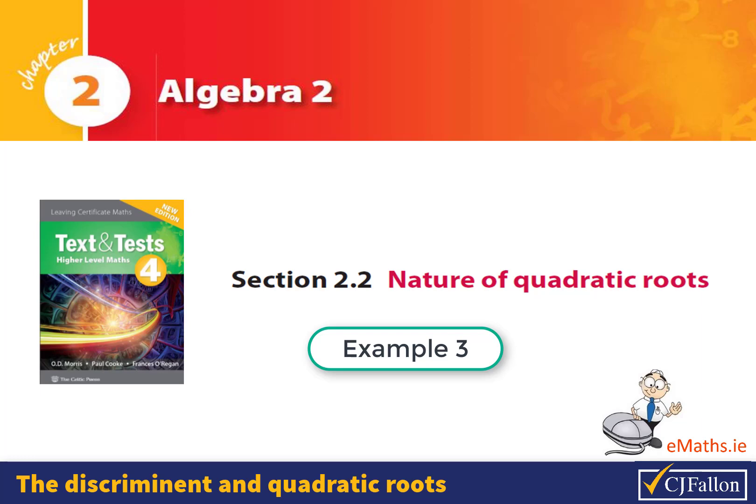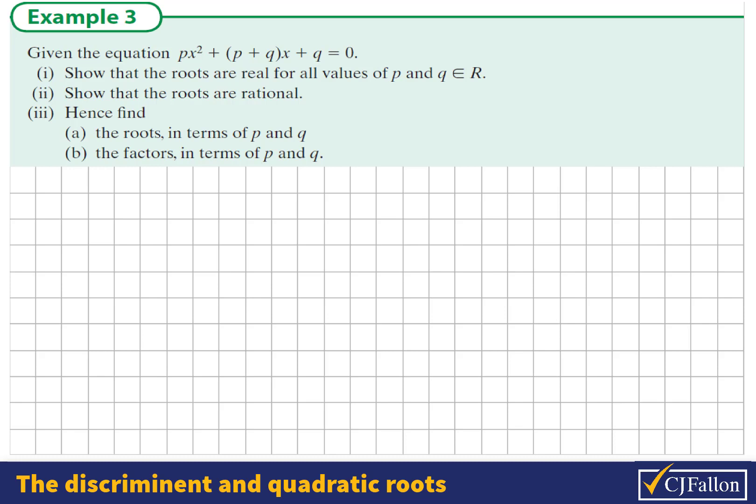The discriminant and the nature of quadratic roots, example 3. We're given an equation px² + (p + q)x + q = 0. We've been asked firstly to show that the roots are real for all values of p and q, where p and q are real numbers themselves.